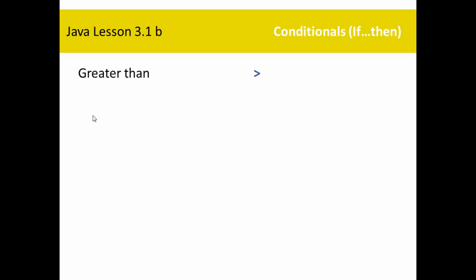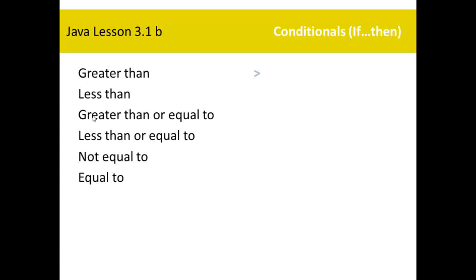For example, if x is greater than 65, print 'you passed.' Greater than is that symbol — that's why we use it. Less than is that symbol. Greater than or equal to — typically in math it's a greater-than sign with a line underneath, but in programming you write greater-than followed by equals. Less than or equal to looks like that.